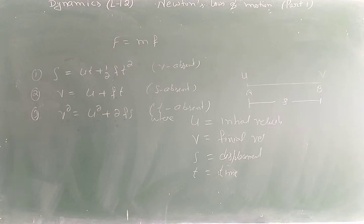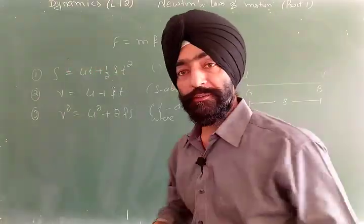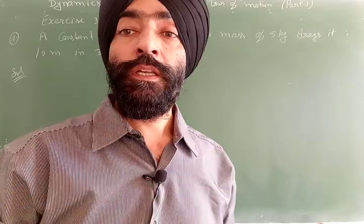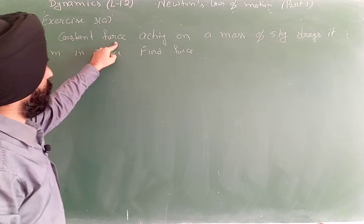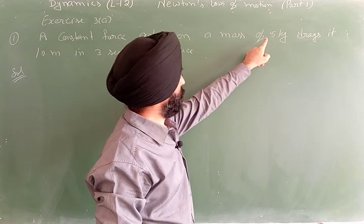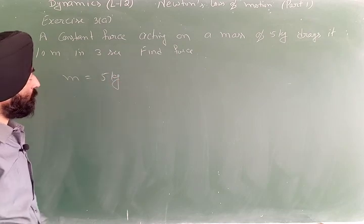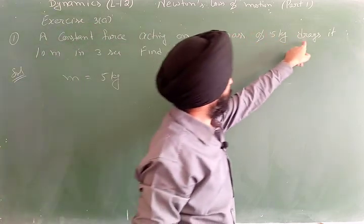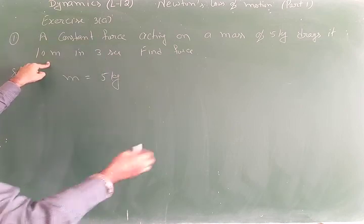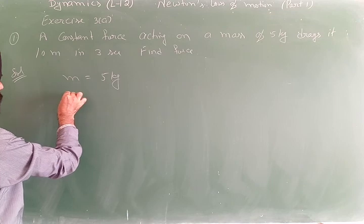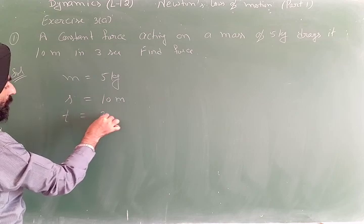Now let's do the exercises. Exercise 1: A constant force acts on a mass of 5 kg and drags it 10 meters in 3 seconds. Find the force. Given: mass m = 5 kg, distance s = 10 m, time t = 3 seconds.